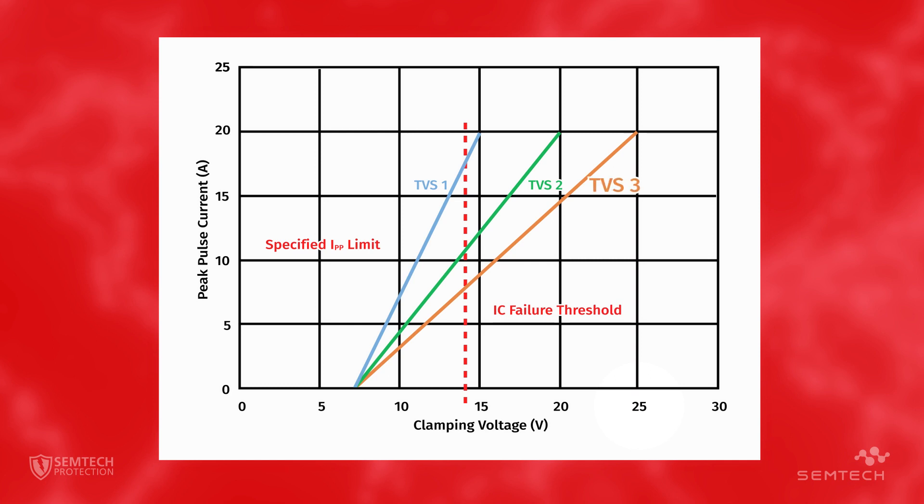TVS3 clamps at 14 volts at an IPP of approximately 7 amps. In other words, due to the higher clamping characteristic, a 10 amp pulse will likely damage the IC even though the TVS will remain undamaged.